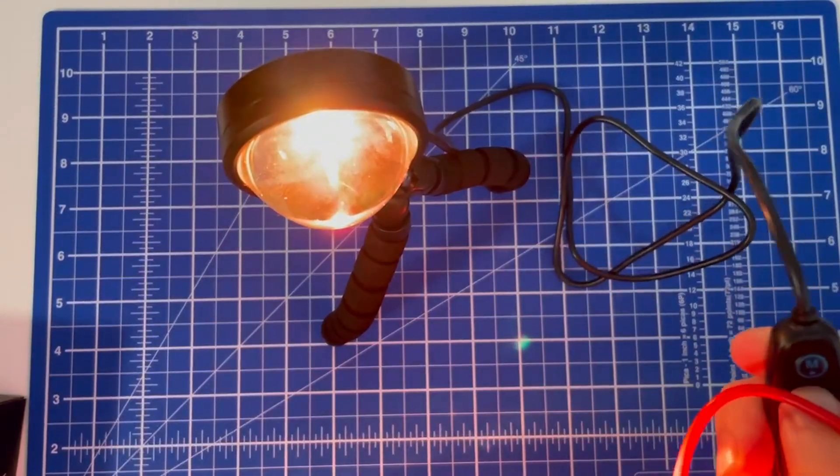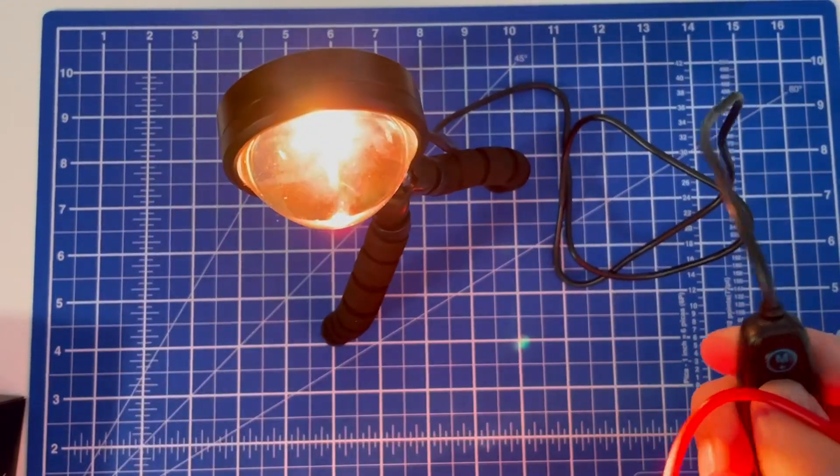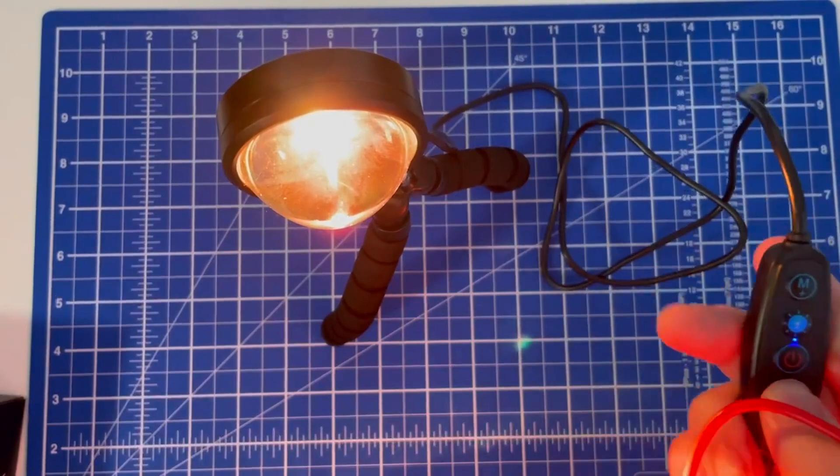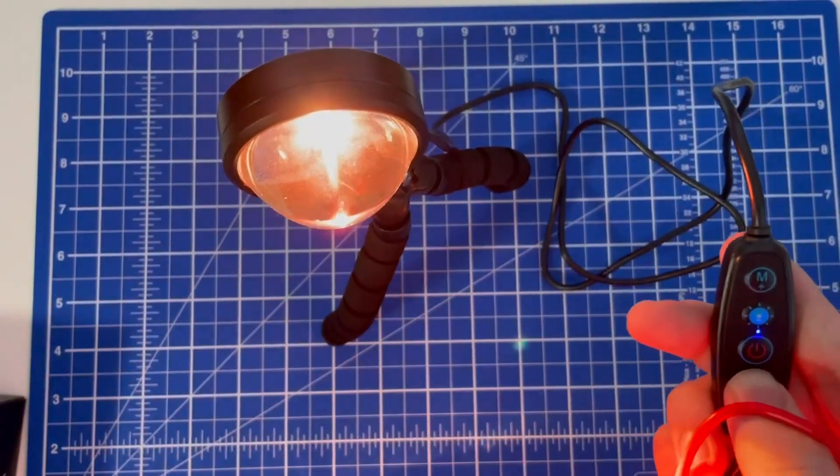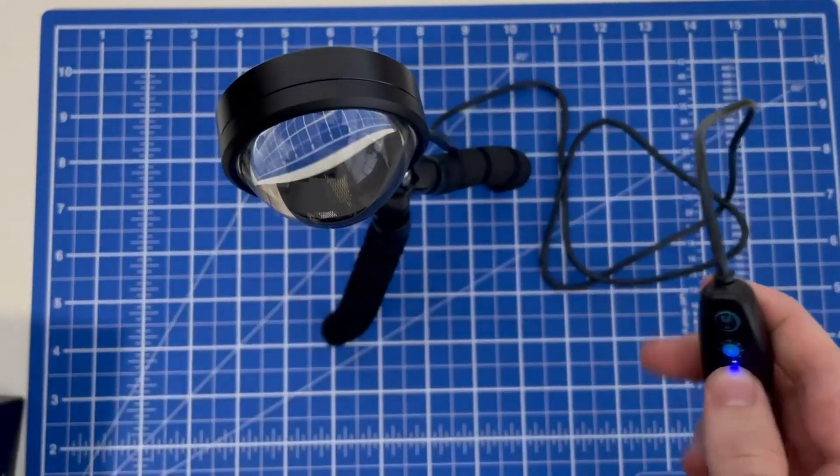You can also change the hue that it has and you can dim and brighten the light. You can also turn it on and off from here.